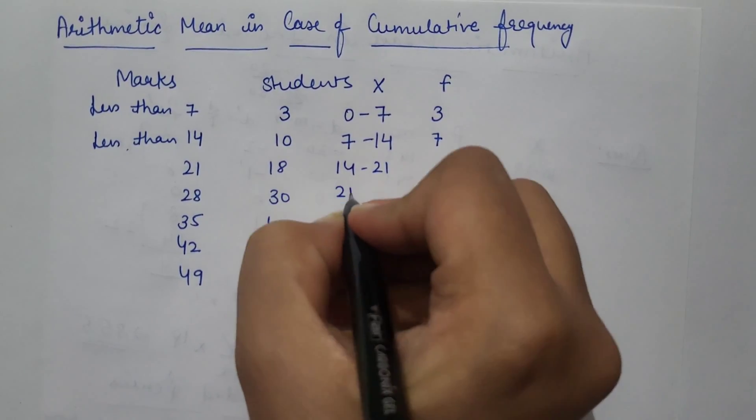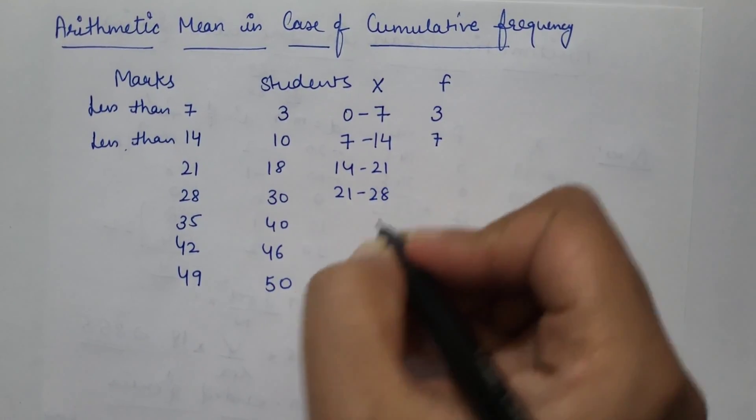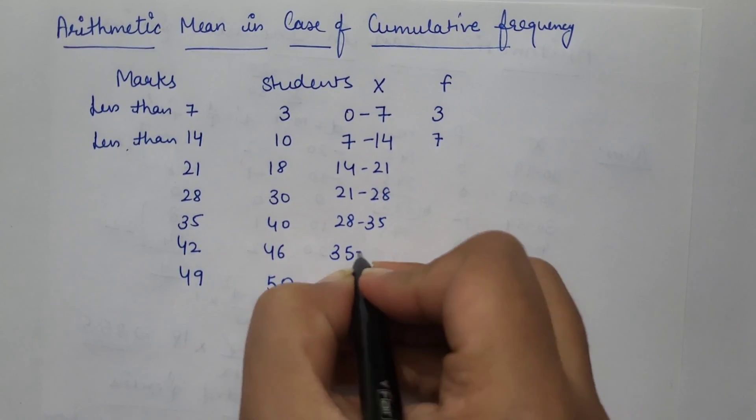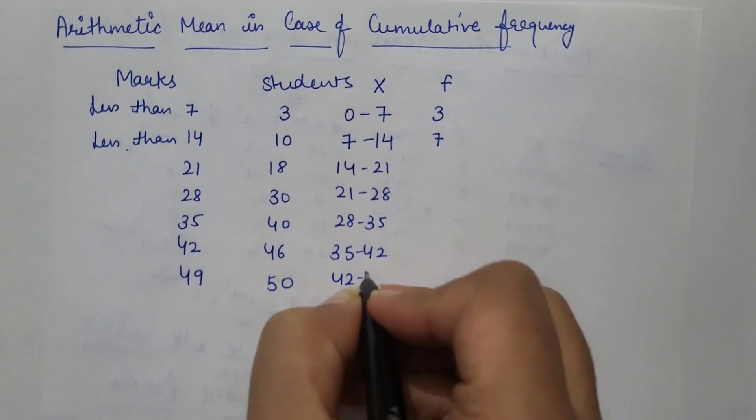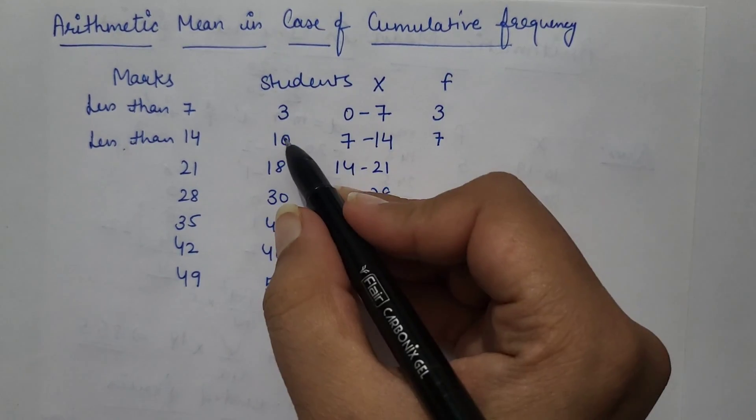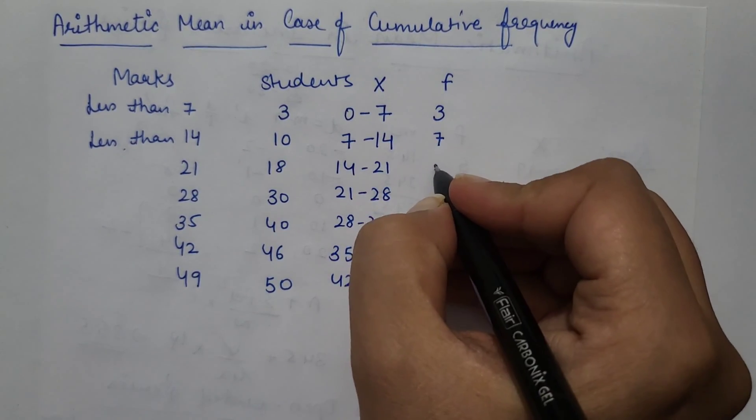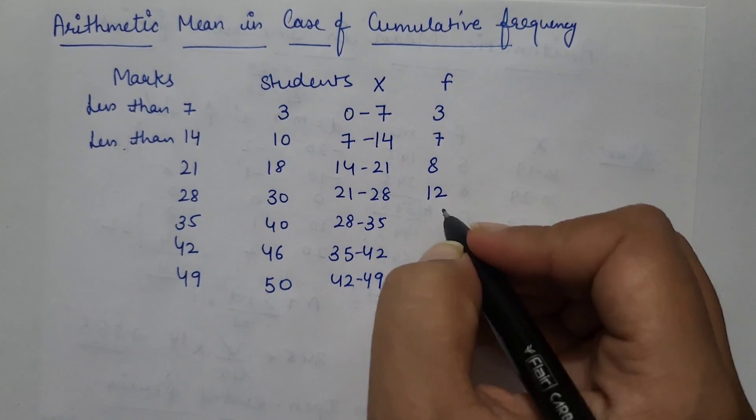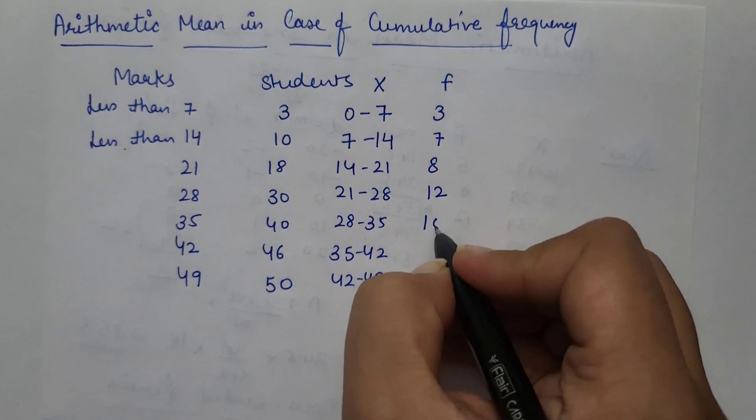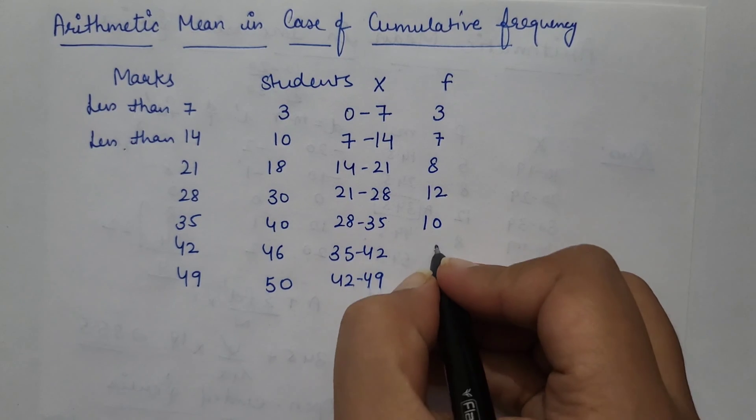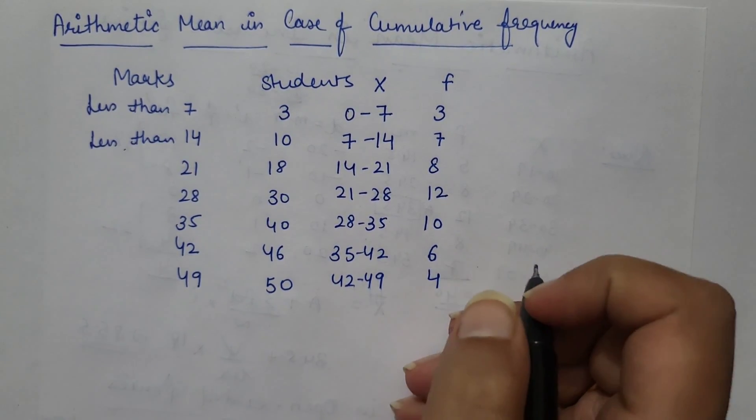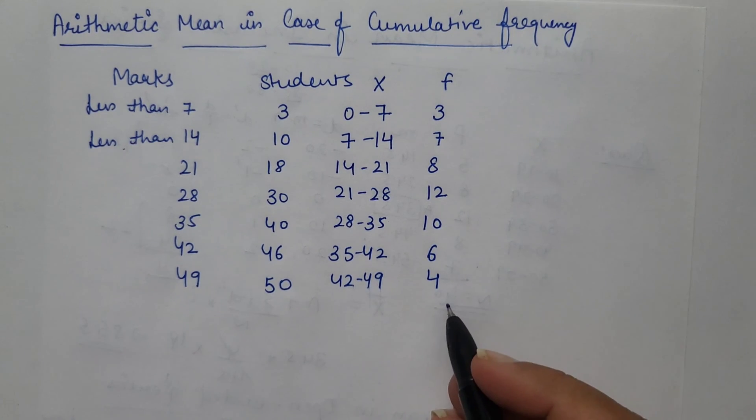Same as, we will convert it into proper exclusive series. So 18 minus 10, that would be 8, 30 minus 18 is 12, 40 minus 30 is 10, 46 minus 40 is 6, 50 minus 46 is 4. It would be frequency.